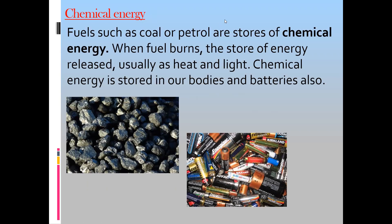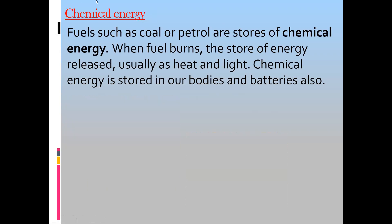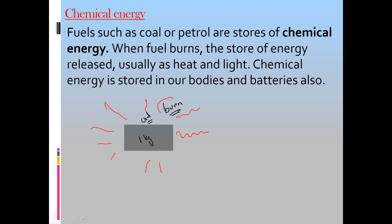For example, you have one kilogram of coal. If you want to cook food, make a barbecue, or produce heat, how do you release the energy from the coal? You burn it. When we burn coal it releases energy. But what is burning? Burning is a chemical reaction. So when we release energy from anything by a chemical reaction, we call that energy chemical energy.